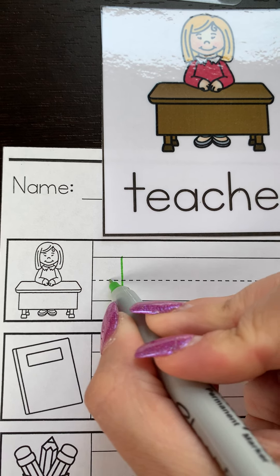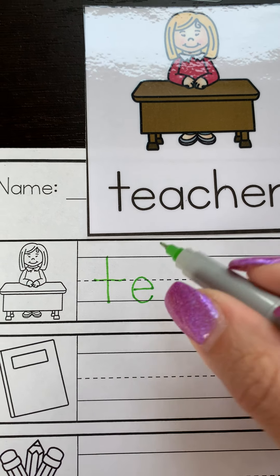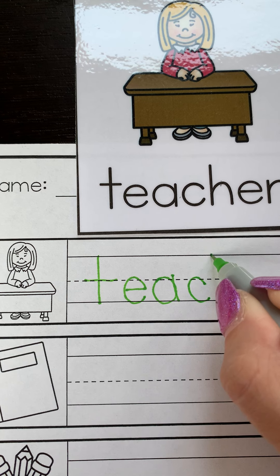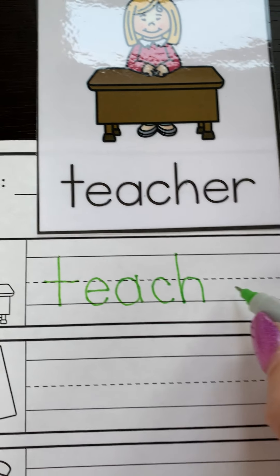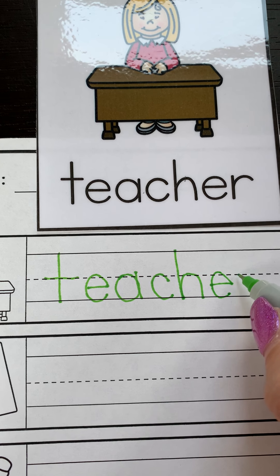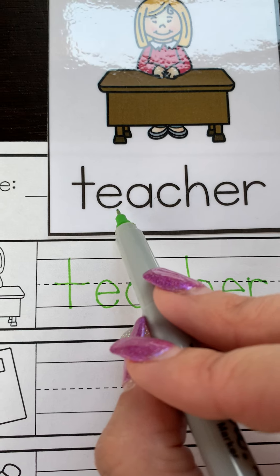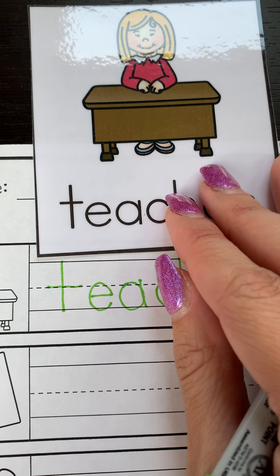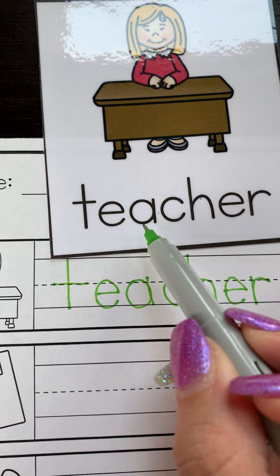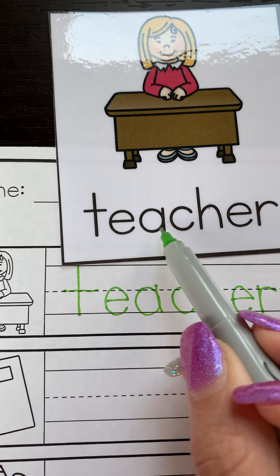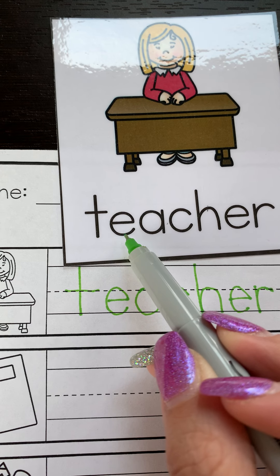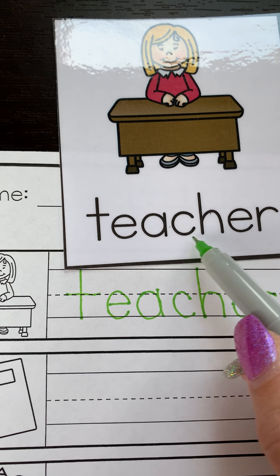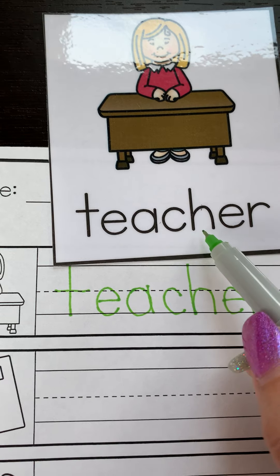T, E, A, C, H, E, R. T-E-CH-R. Now this word is very tricky because it has two vowels. When two vowels go walking, the first one does the talking. So the E says its name. Instead of T-E-A, the CH is a digraph — CH says 'ch' when they're together.